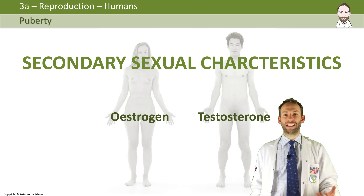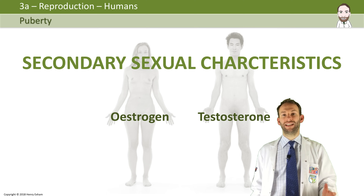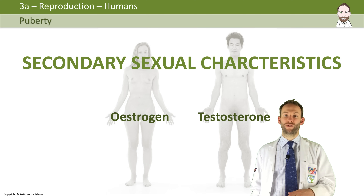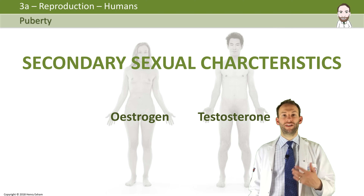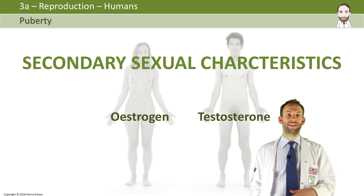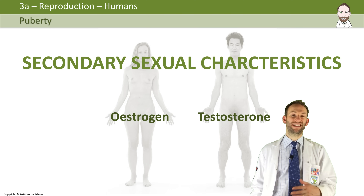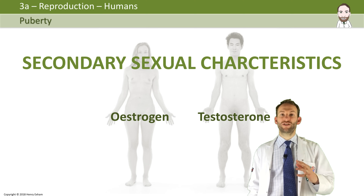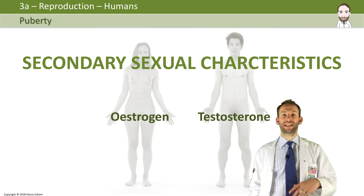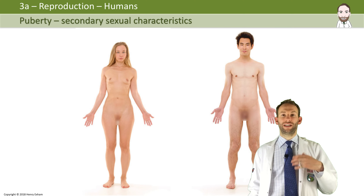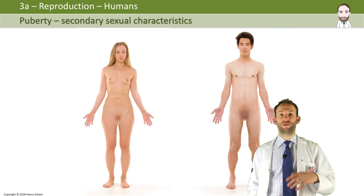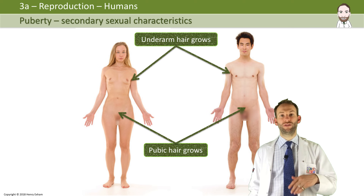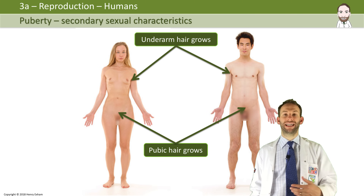In girls puberty can be aged between 11 and 14, and it's usually a little later in boys, between 13 and maybe up to 16. Secondary sexual characteristics include: in both boys and girls, underarm hair will start to develop and pubic hair will grow.